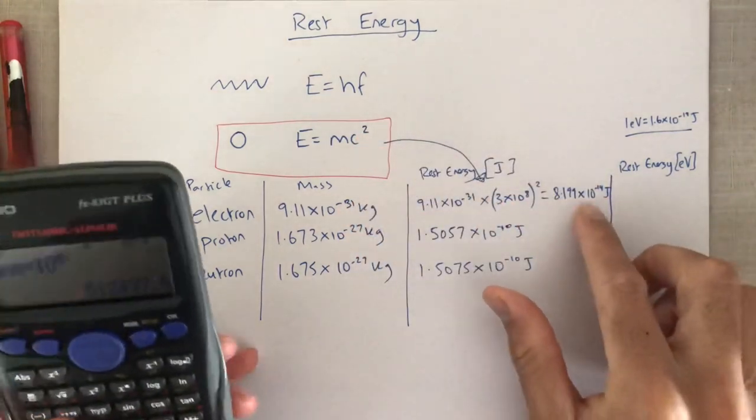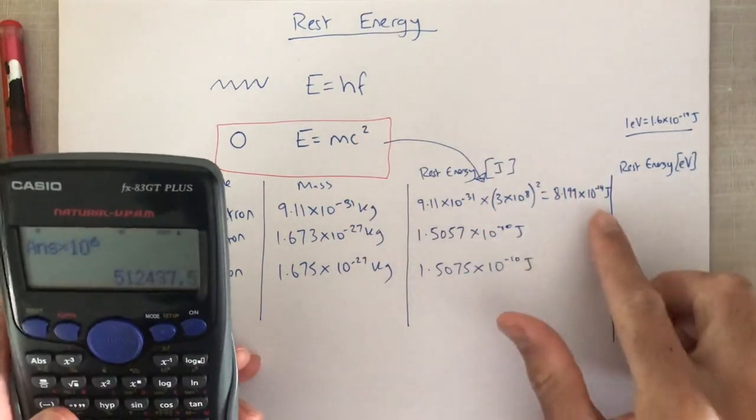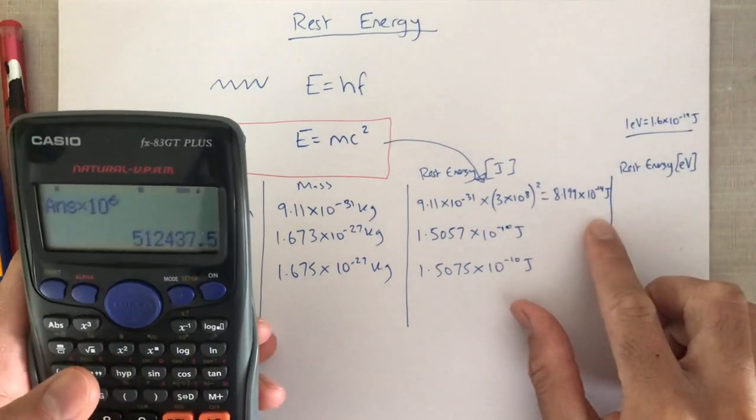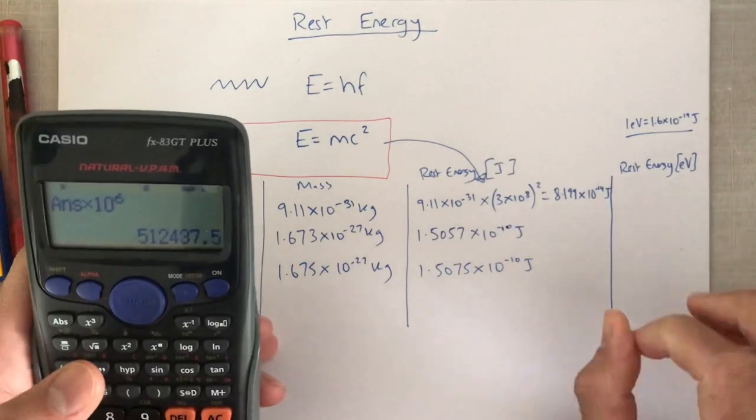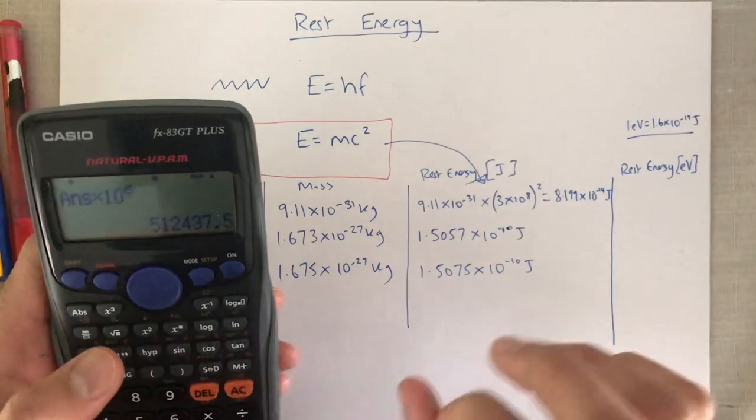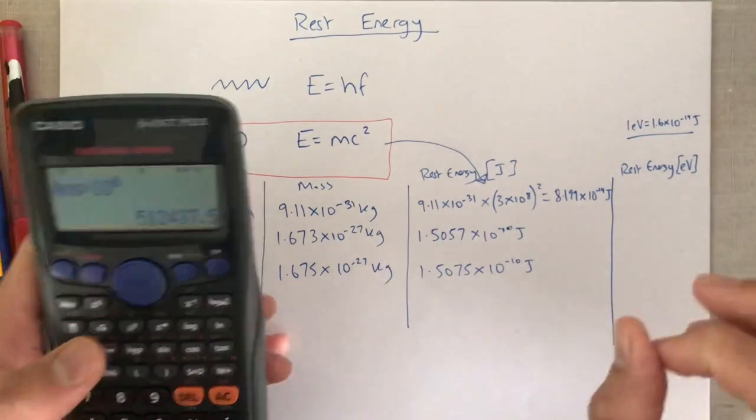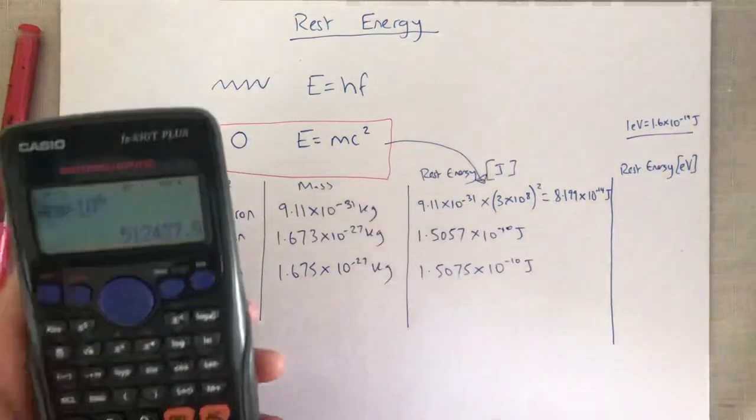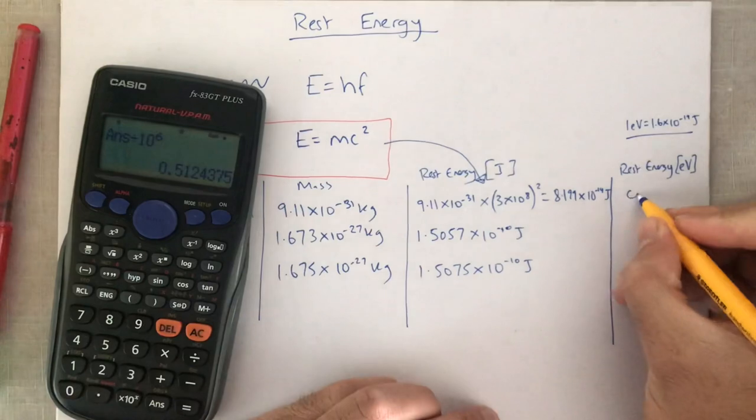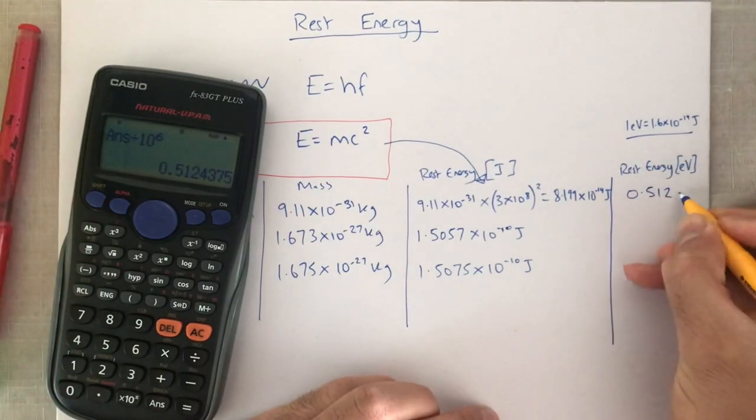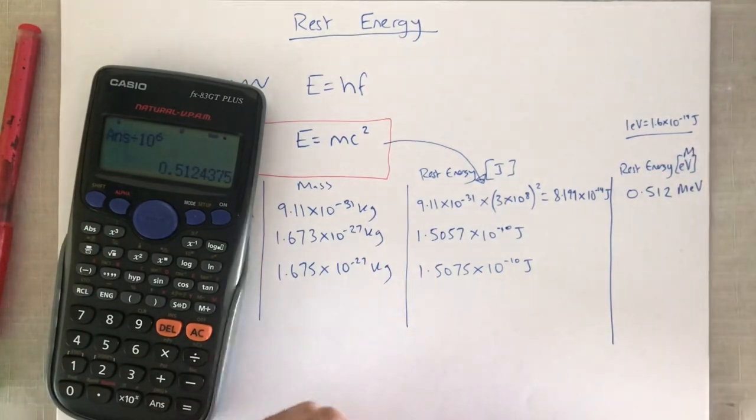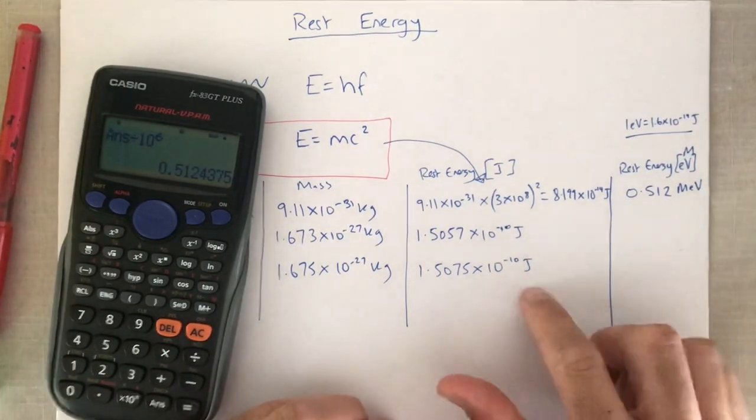Right, once we have the rest energy in joules, we divide by 1.6 times by 10 to the minus 19. And we get a number which is 512437.5 electron volts. So it's not actually sensible to put this in electron volts. We're going to add a prefix in there, and that prefix is going to be mega electron volts, which gets me to 0.512 MeV. And we do this for both of those two as well.